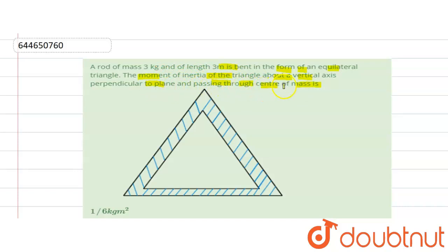Here we have a rod of mass 3 kg, meaning each one of the three rods has mass 1 kg. The total length is 3 meters, so each rod has length 1 meter. Since this is an equilateral triangle, all sides are equal — each side is 1 meter.